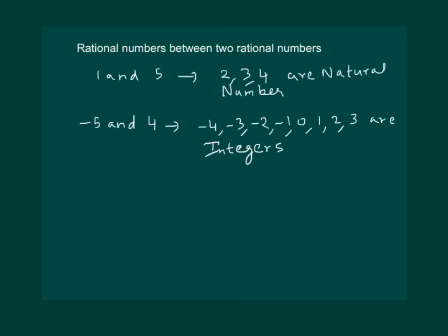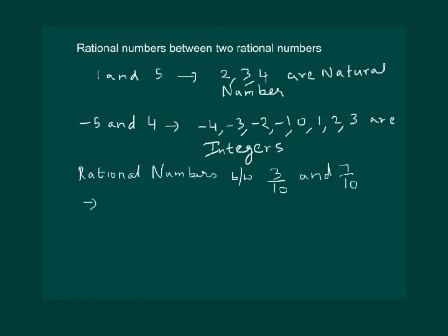But if we are asked for rational numbers between 3 by 10 and 7 by 10, maybe you will answer that 4 by 10, 5 by 10 and 6 by 10 are the rational numbers that lie between them. But this is not the complete answer, because you must have forgotten the fact that rational numbers have equivalent rational numbers.